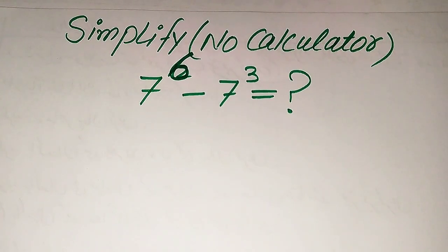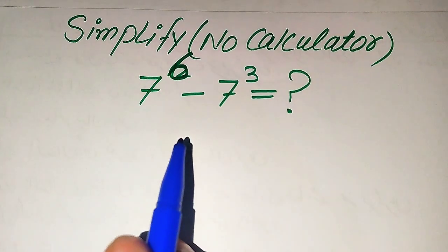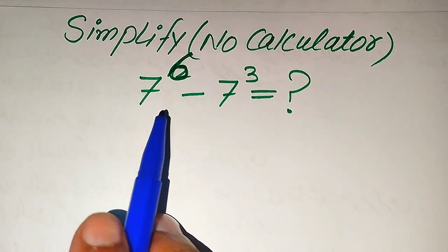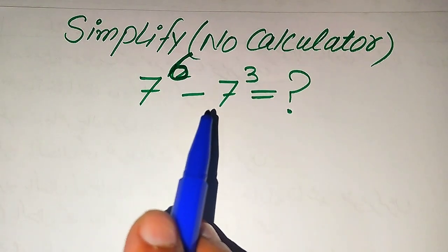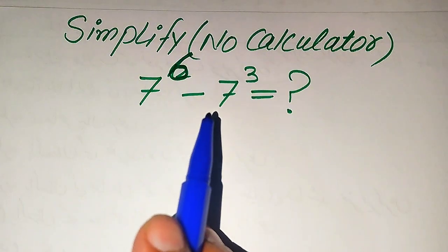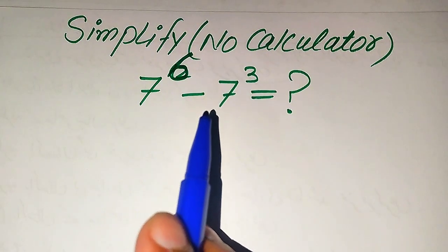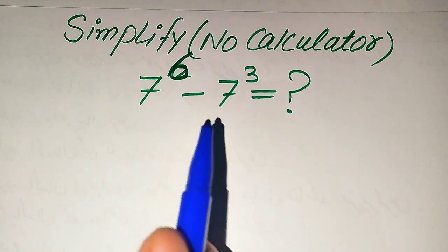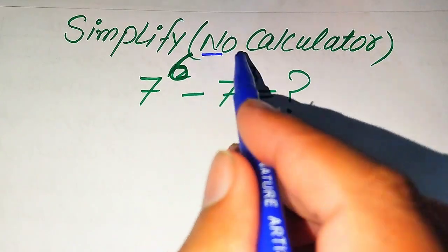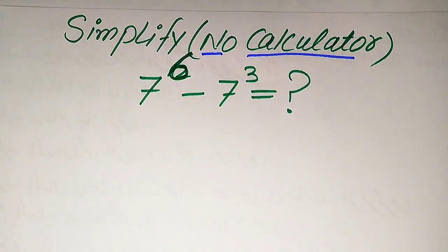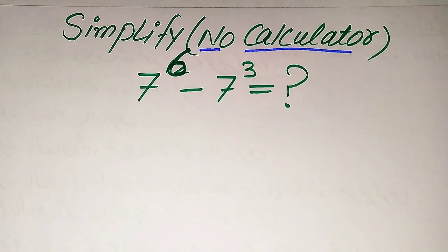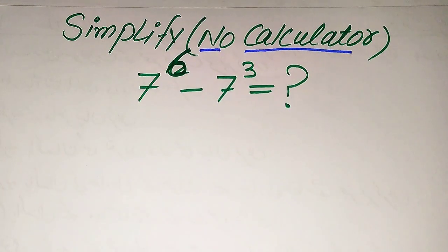Hello everyone. How to simplify this nice algebraic expression without using the calculator: we have 7 to the power of 6 minus 7 cubed, and we write this algebraic expression into the lowest form. Remember that the calculator is not allowed in this problem, which means we need to show all of the working here.